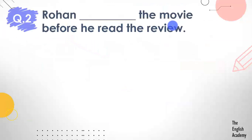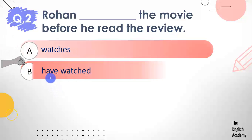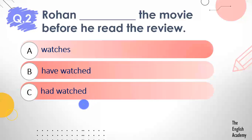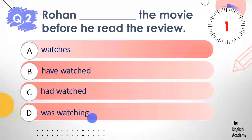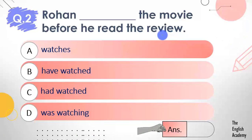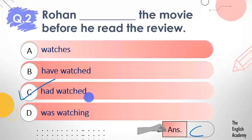Question number 2: Rohan ___ the movie before he read the review. Options: A) watches, B) have watched, C) had watched, D) was watching. The answer is option C — had watched. Rohan had watched the movie before he read the review.